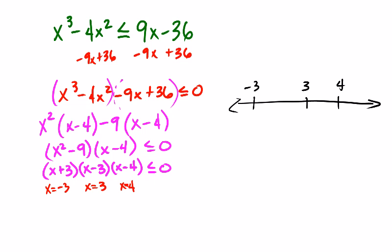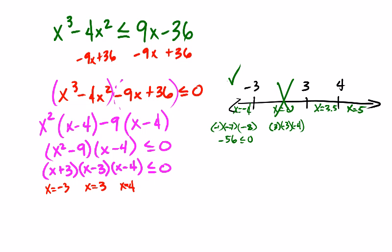We have four intervals to test. I'm going to pick x equals negative 4: negative 4 plus 3 is negative 1, negative 4 minus 3 is negative 7, negative 4 minus 4 is negative 8. Multiplying all three together gives negative 56, and that is less than or equal to 0, so this works. Now plug in 0: I get 3, negative 3, and negative 4 — that turns out to be a positive number, so it's not going to work.